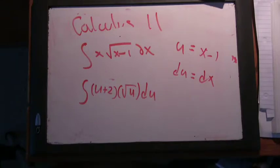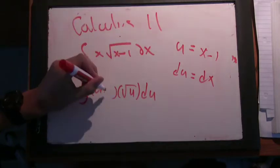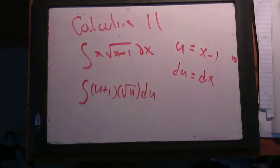So then we have integral of u plus 2 times square root of u du. I'm not sure how you got that. Well, it's just x plus 1, or u plus 1. Times the square root of u, square root of x minus 1. Because since u is x minus 1, then x equals u plus 1. Right.